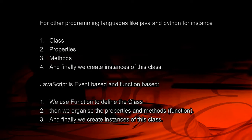Let's look at how other languages like Java and Python implement object-oriented programming. In Python, you first write a class which contains your properties and methods. Properties are the data you can see from the object, and methods are the behaviors. Finally, you create instances of this class — and the instances are what we refer to as objects. An object is an instance of a class. In JavaScript, the approach is different since JavaScript is based on functions.